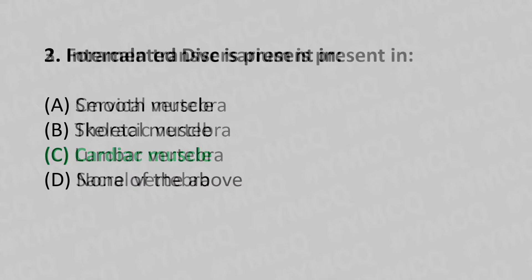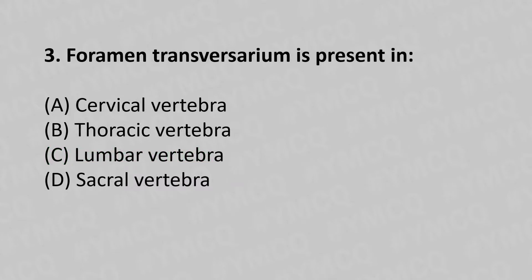Moving to our third question. Foramen transversarium is present in: Option A, cervical vertebra. Option B, thoracic vertebra. Option C, lumbar vertebra. Option D, sacral vertebra. And the answer is Option A, cervical vertebra.